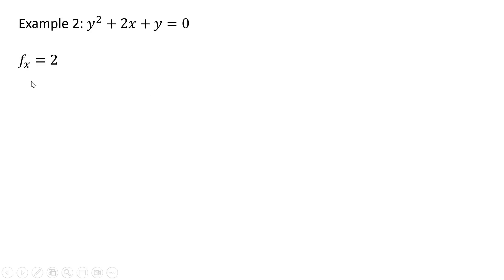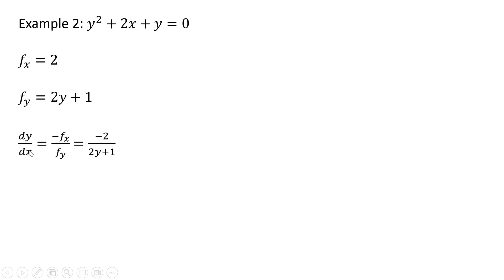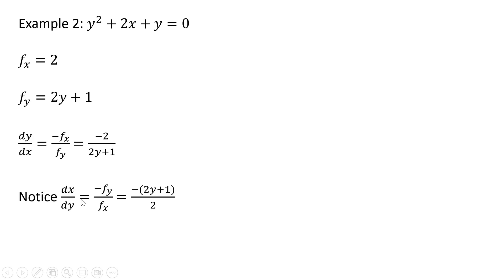Example 2: taking the derivative of this function with respect to x, we get 2. Taking the derivative with respect to y, we get 2y plus 1. Applying the implicit function rule, we get minus 2 divided by 2y plus 1. You will notice that the derivative of x with respect to y is just the reciprocal of this, so we can rewrite it that way.